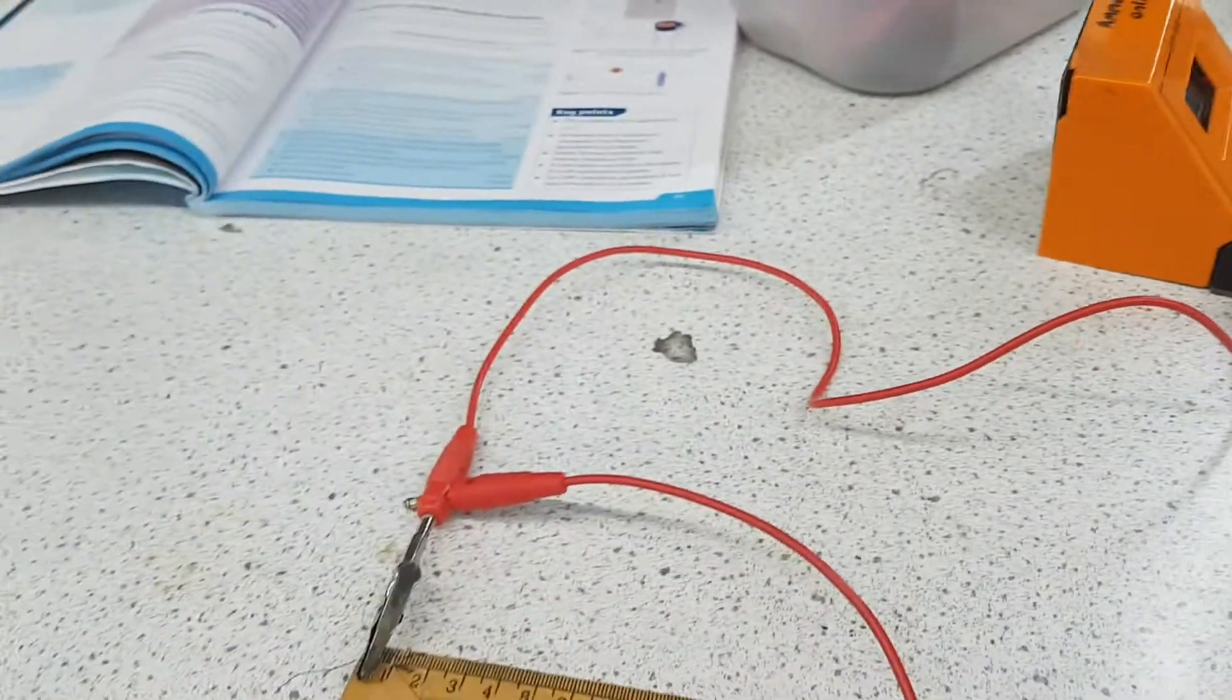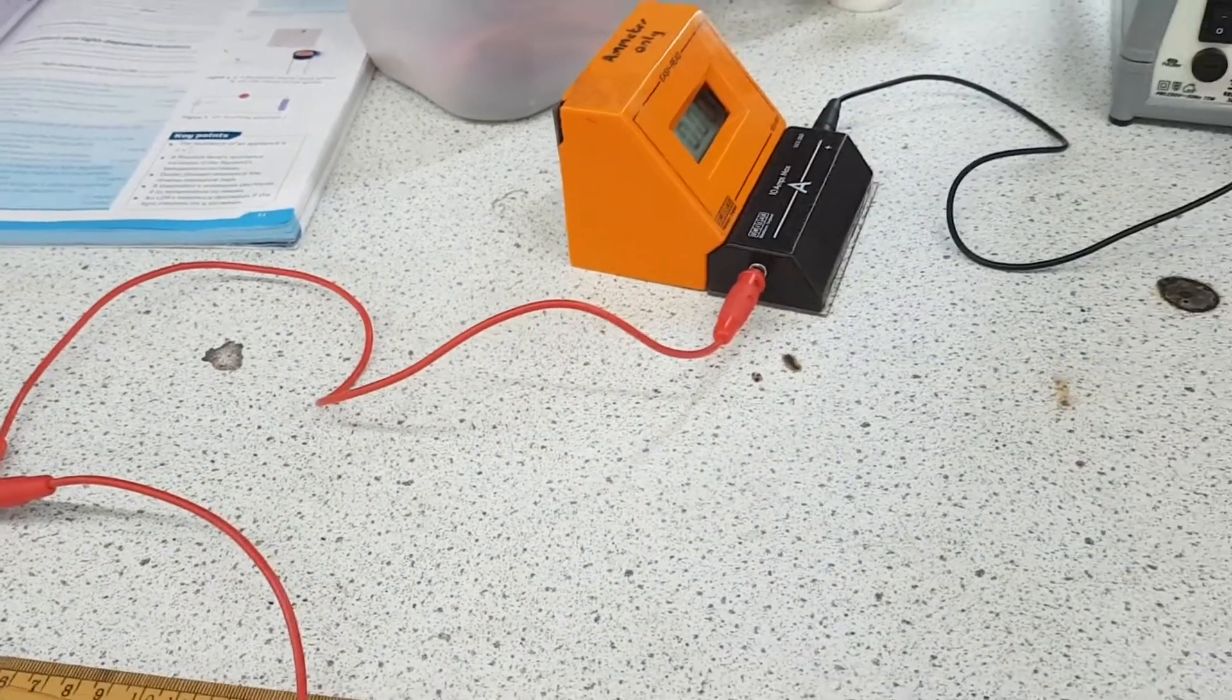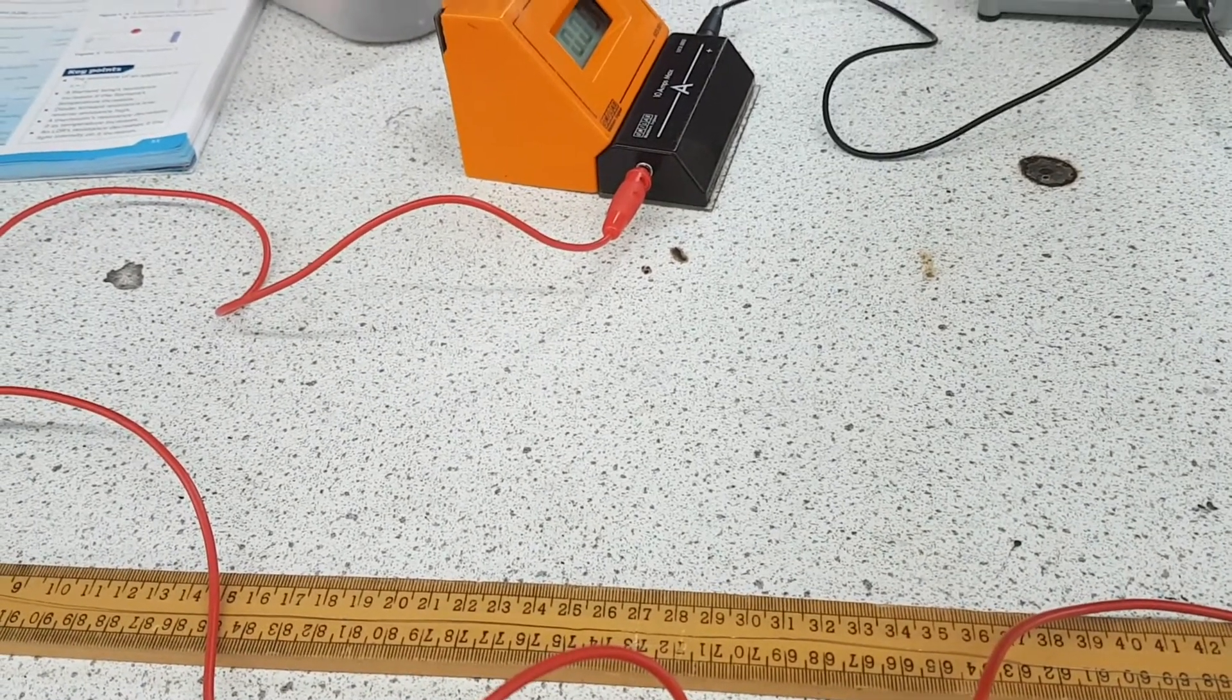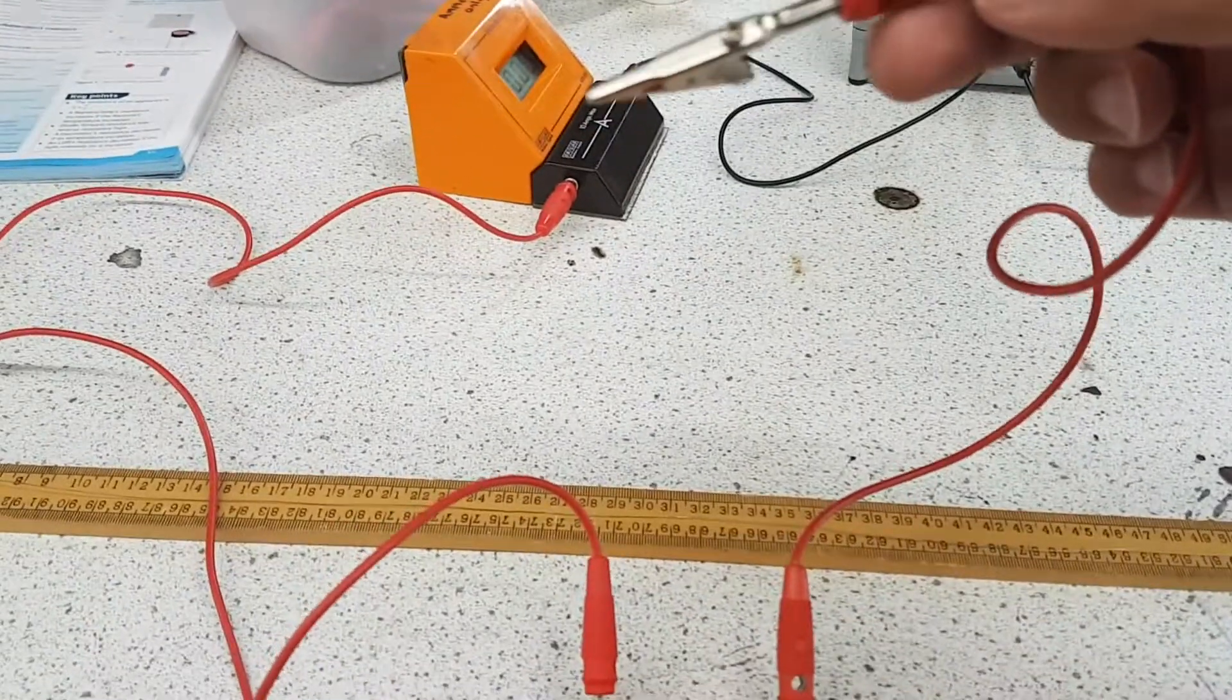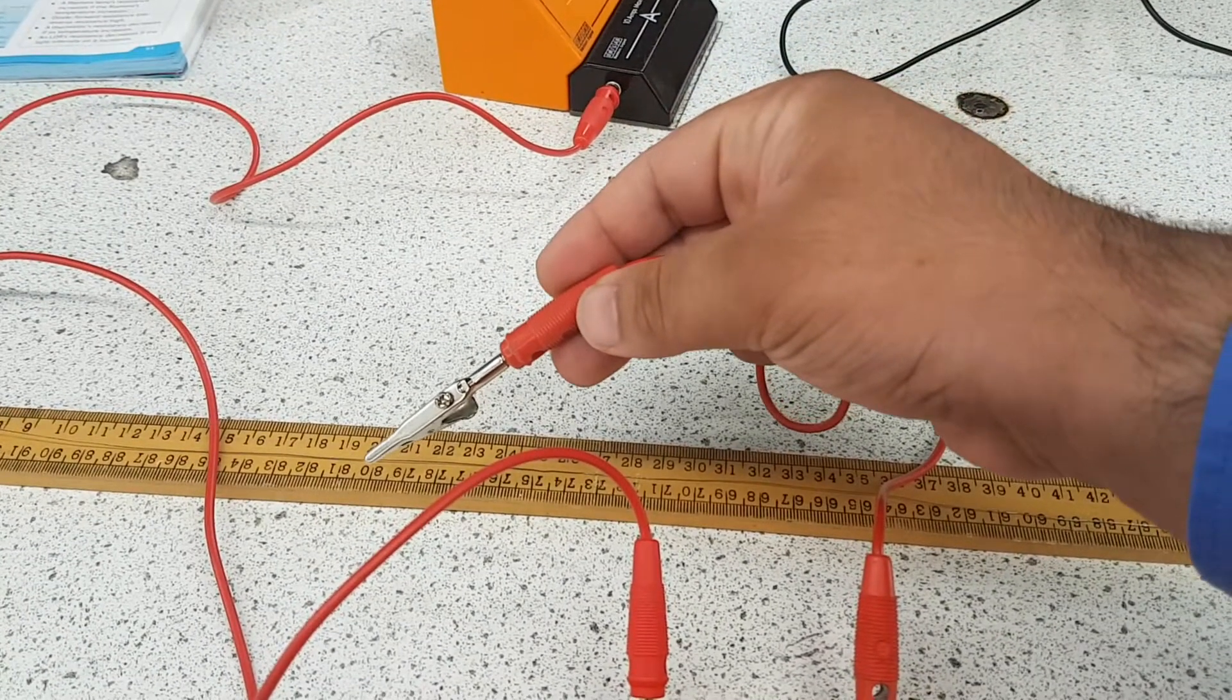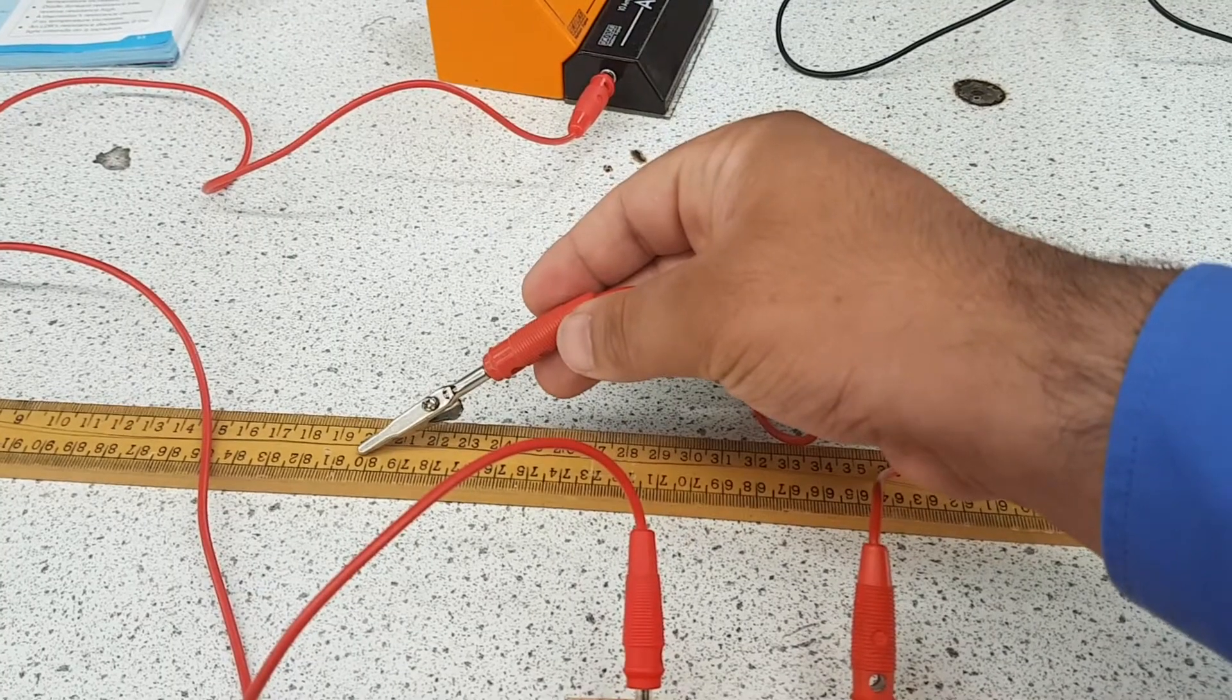And all you're going to do is record the voltage and the current at different readings. So I will go for 20 centimeters. That is 20 centimeters from here. So I'll take my loose crocodile clip from my voltmeter and place it at 20 centimeters. And that will give me a voltage and a current reading. I'll make a record of that.